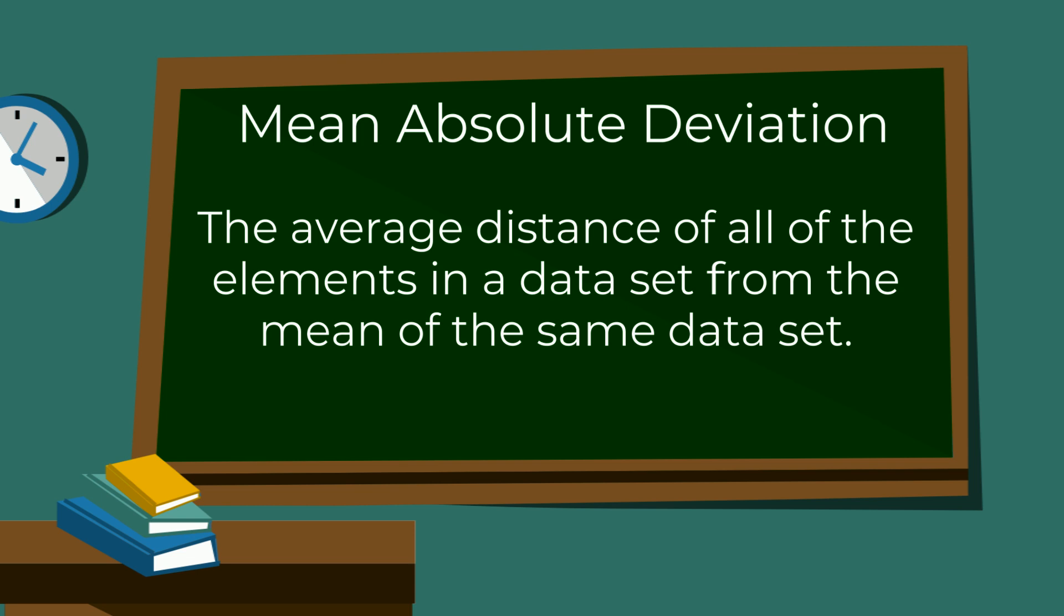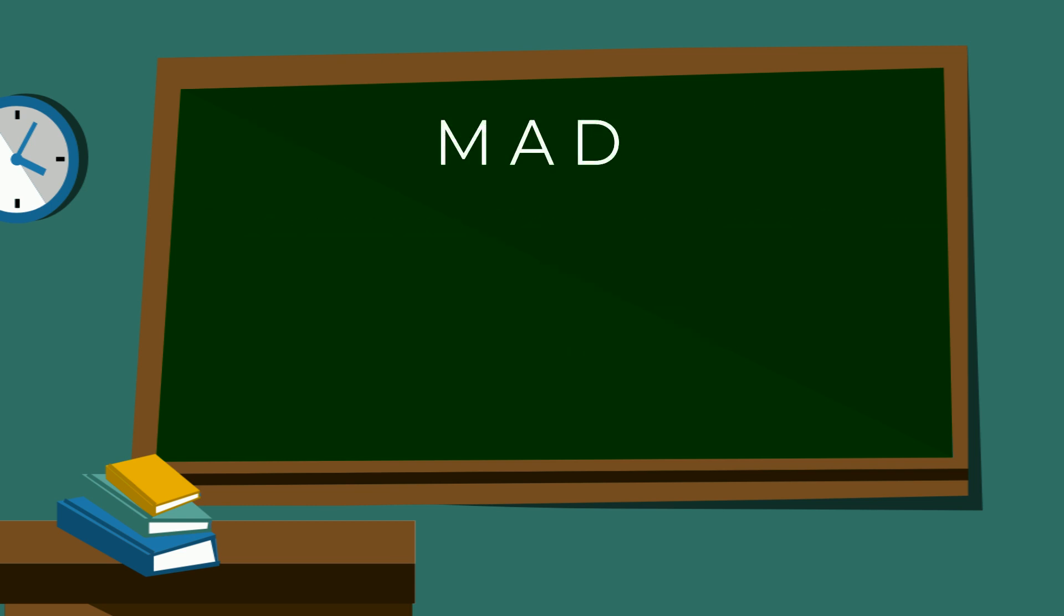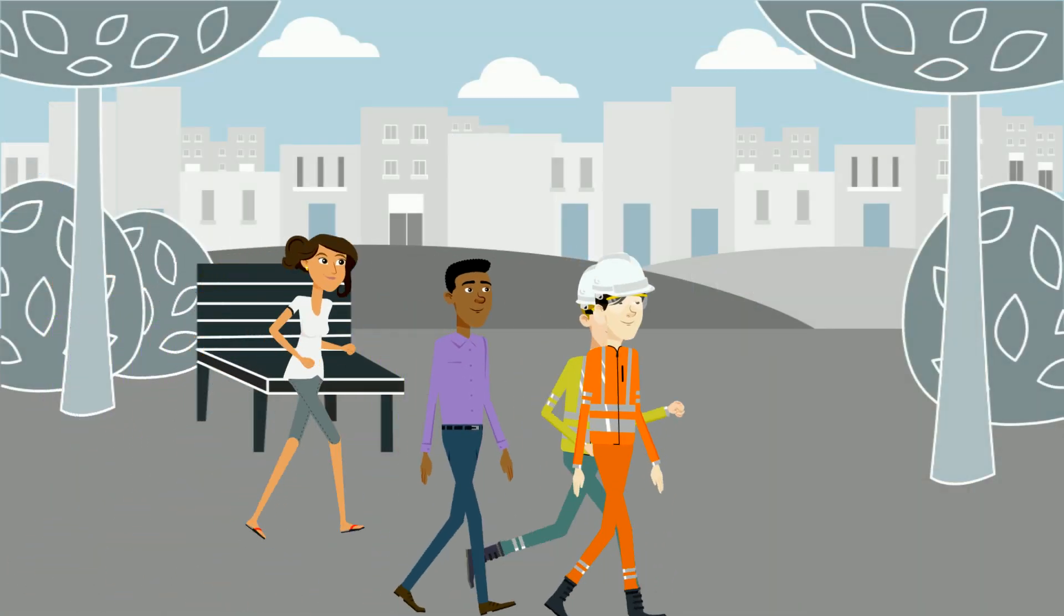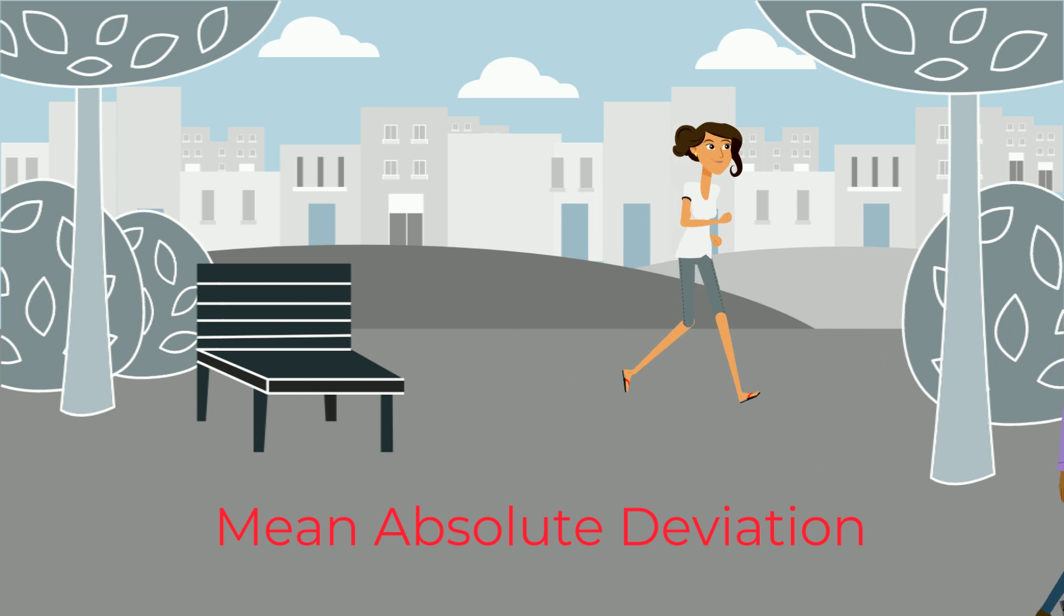It may help you understand what you're calculating if you look at the abbreviation MAD. M stands for the mean, which is the average. The A stands for the absolute value, which you will use, and the D is for deviation, which is to depart from the established course, much like this female walker. So the MAD tells you how much the data set deviates off course or from the average.